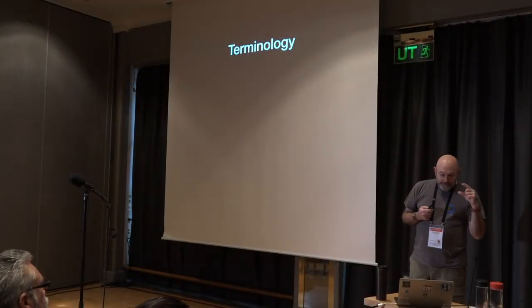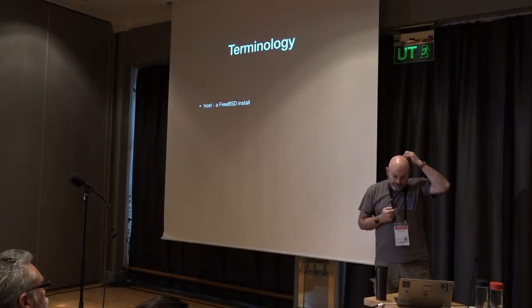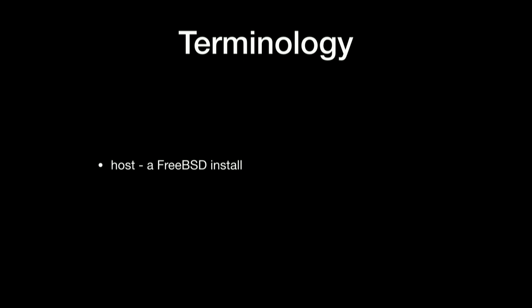It always helps to start with two basic points of terminology when talking about jails. The host is just basically a FreeBSD install — and that can be anything: a Raspberry Pi, a 48-core system in a data center, or your laptop. They can all run jails. A jail is basically a VM on a host — and I know it's not technically a VM, but we'll talk about that on the next slide.